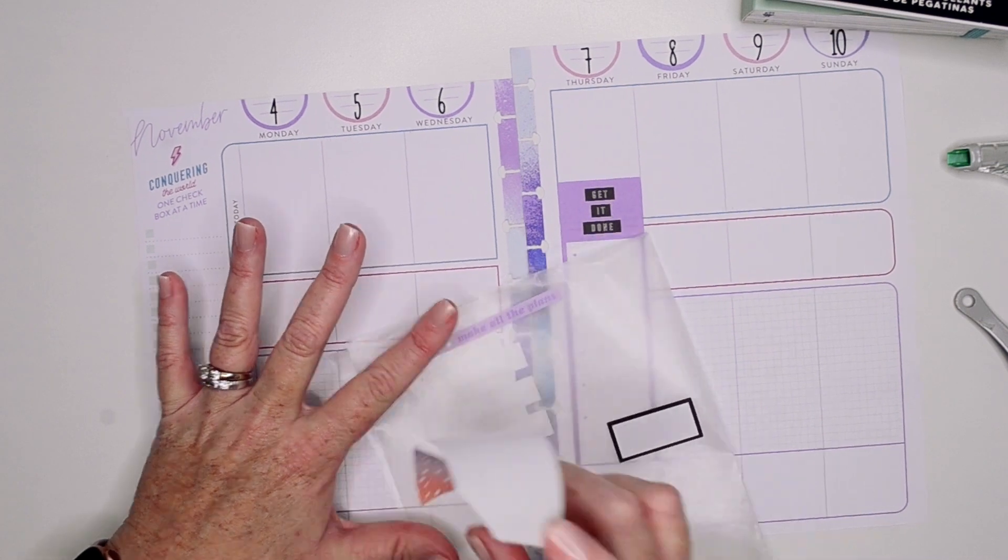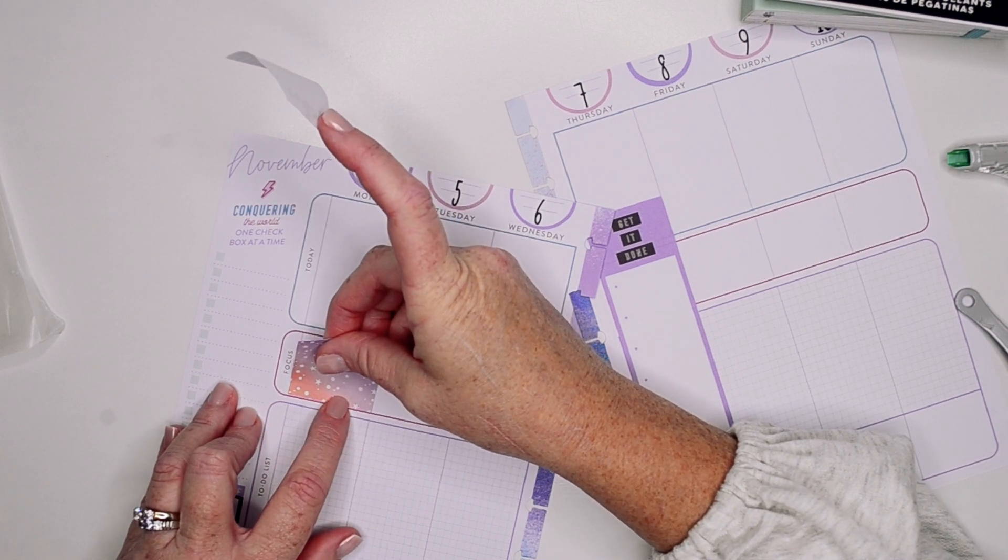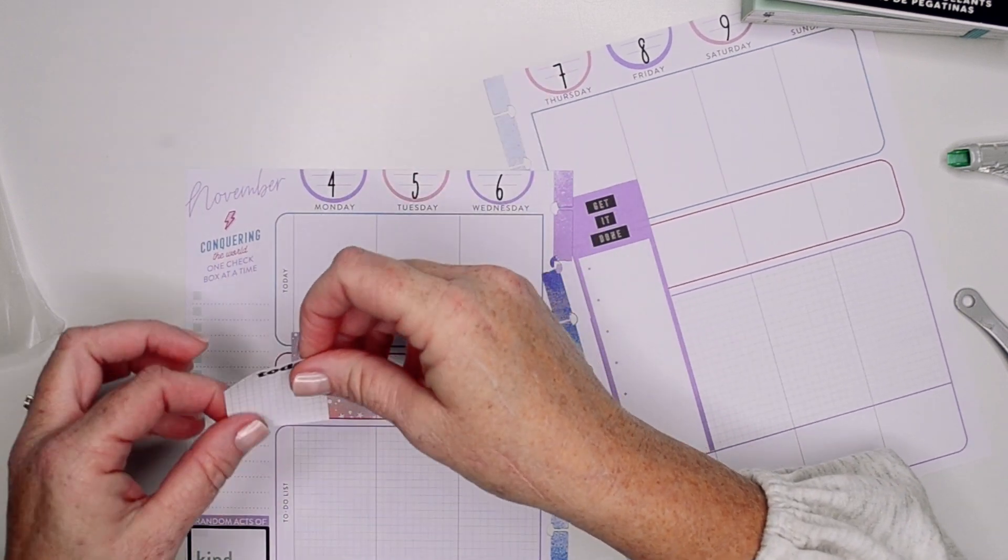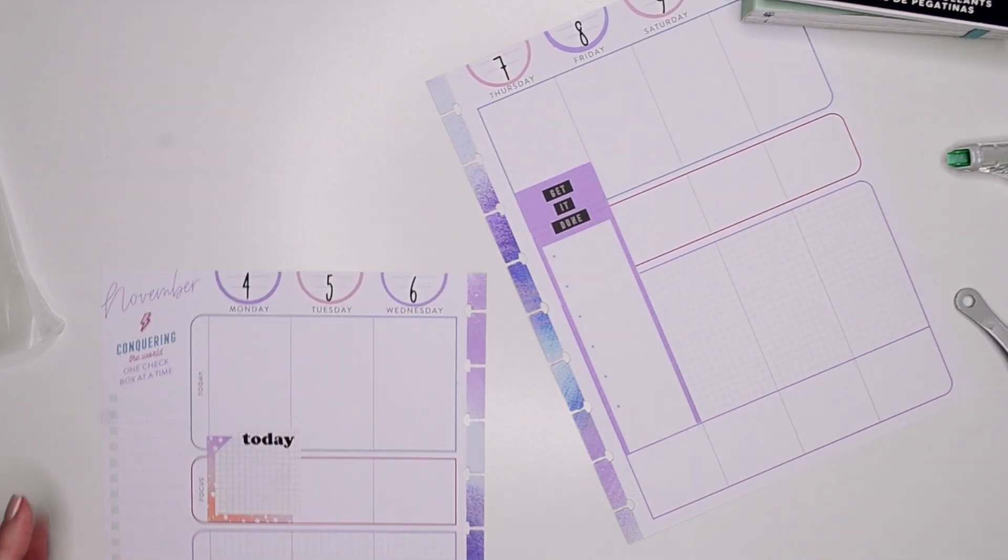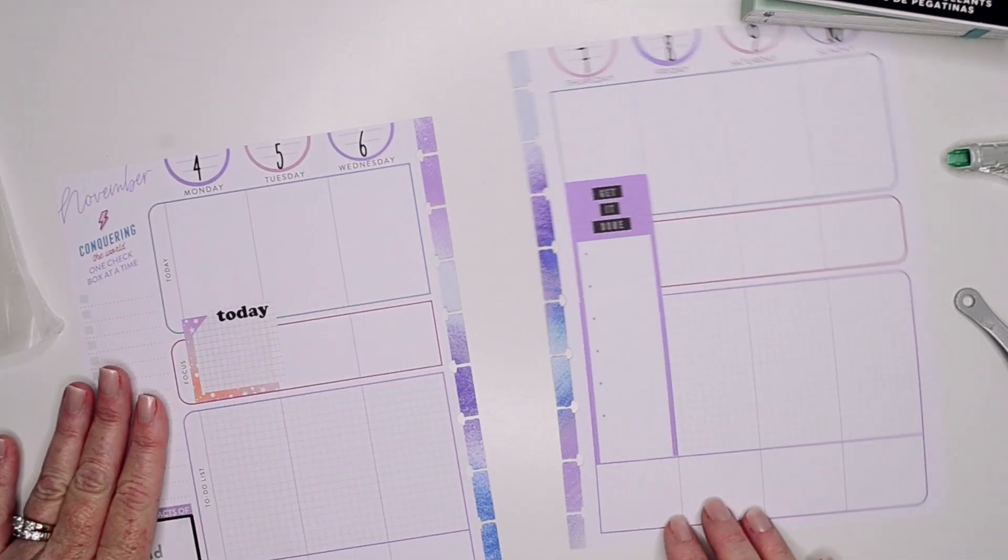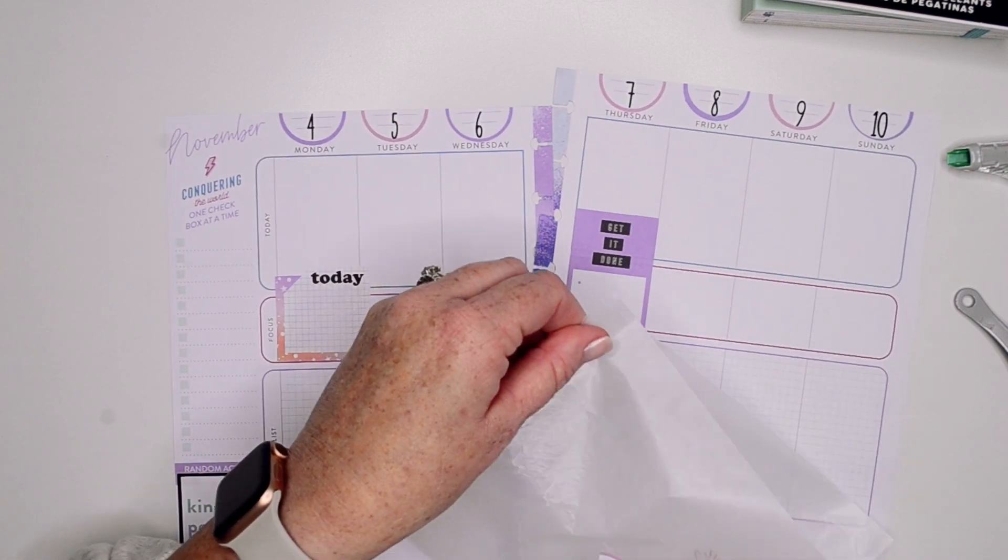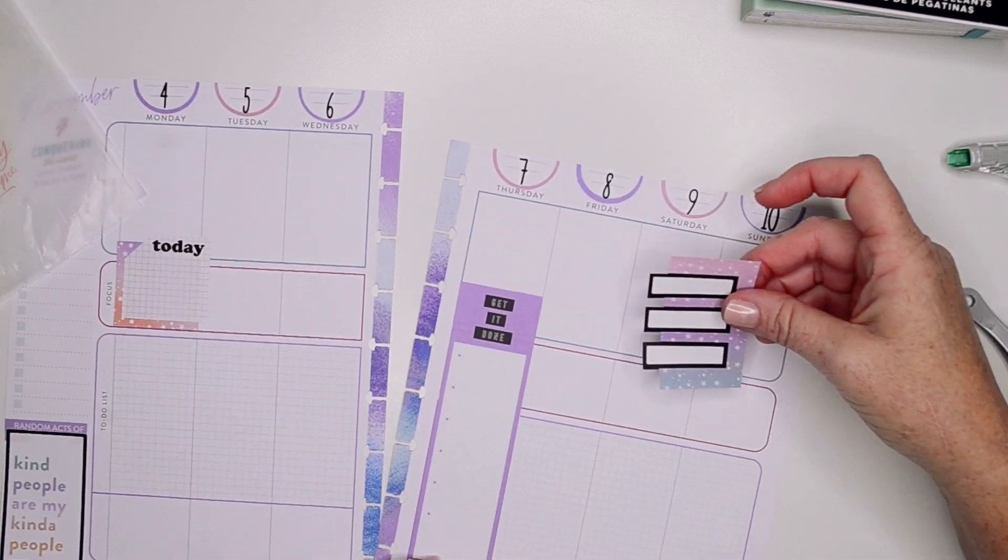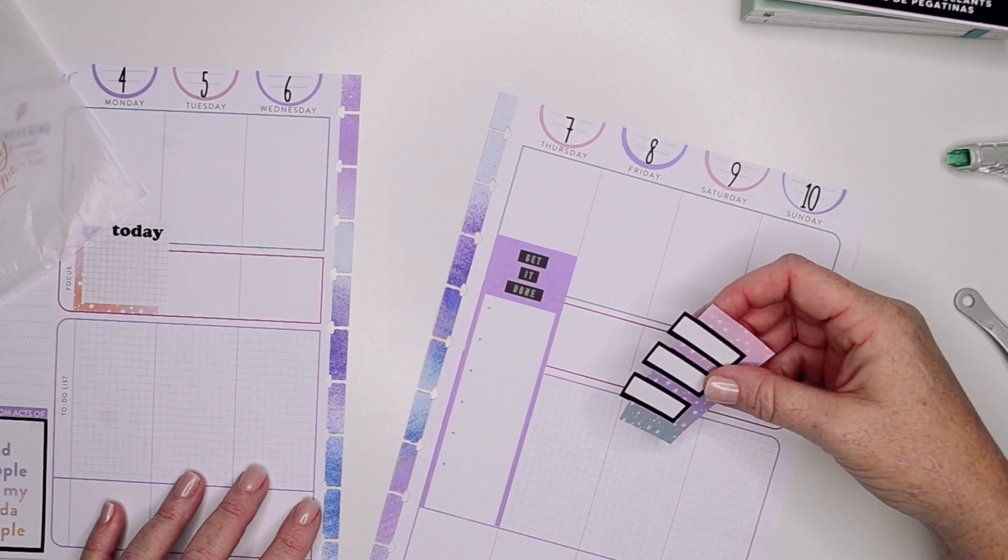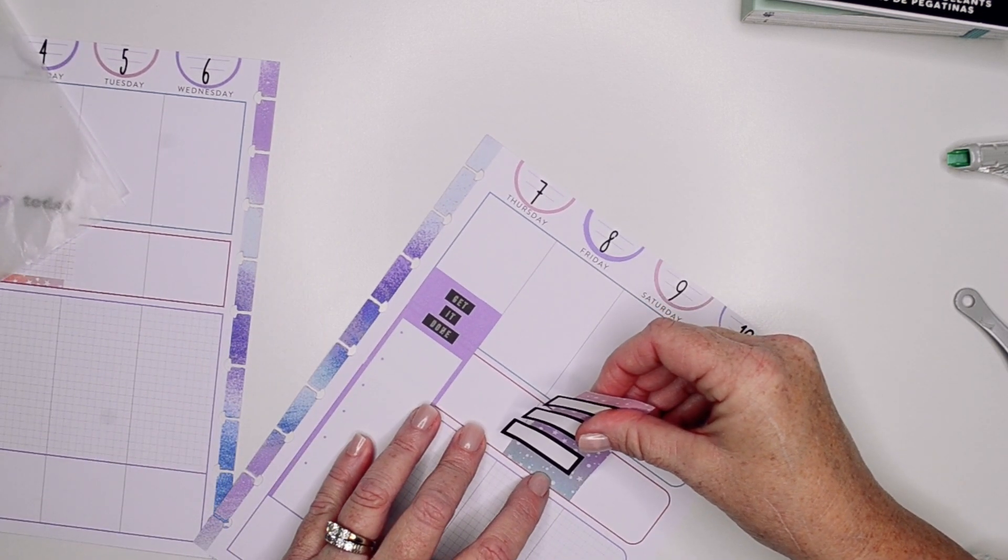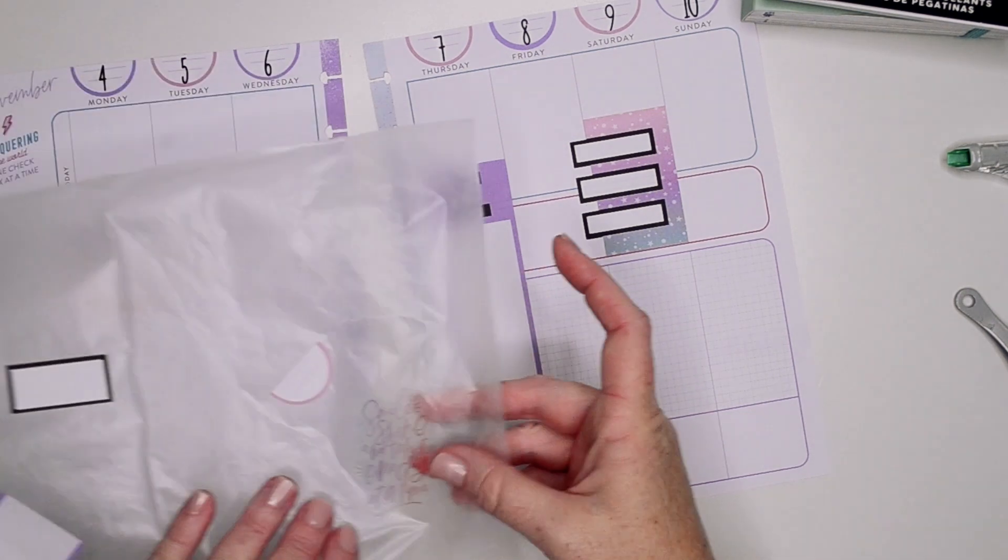I thought it would be cute to layer these two boxes here at the beginning of the week. So we're going to put this down here in my focus box and just kind of layer this today sticker here. And then I also picked this sticker that kind of matches. So I thought it would be cute to put over here on my weekend. Let's try it on Saturday because I also chose a quote to go down here.